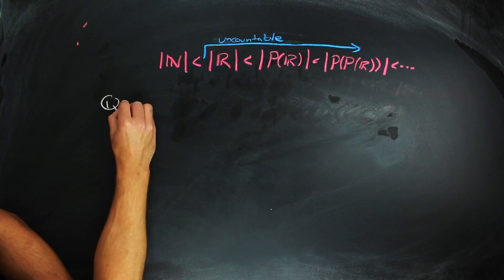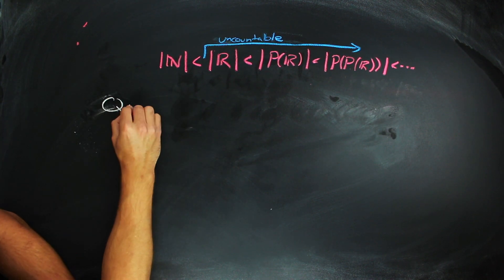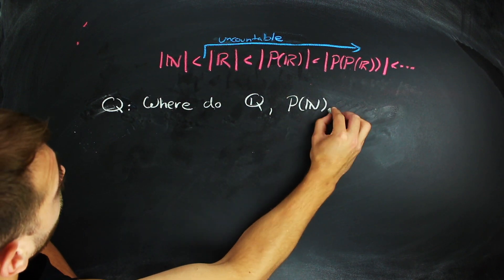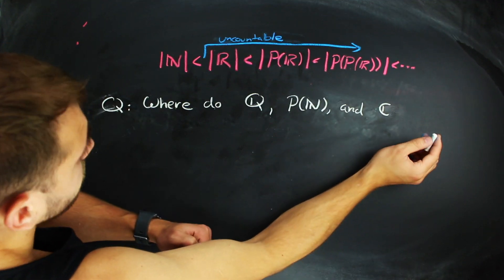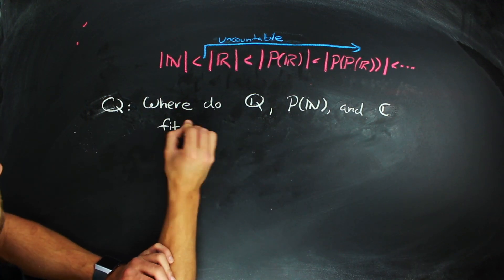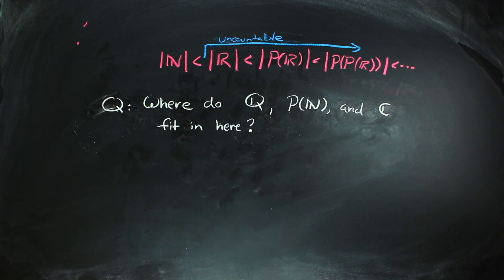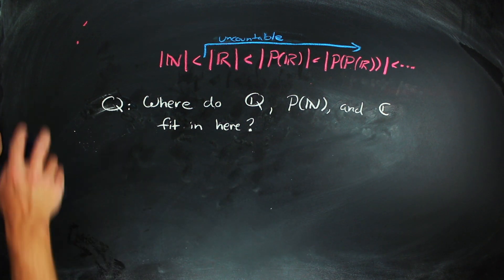Anyhow, looking at this ordering here, if you want more practice with this idea, or want to work on constructing bijections or using diagonalization arguments, you might want to figure out where the rationals and the power set of n, or the power set of the naturals, fit in into this ordering here.